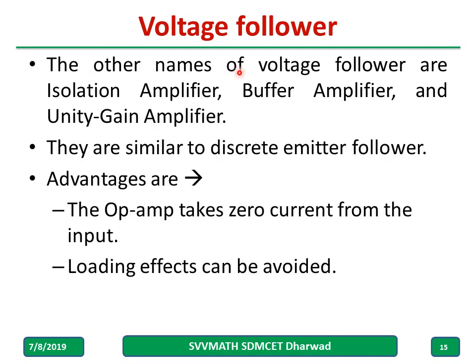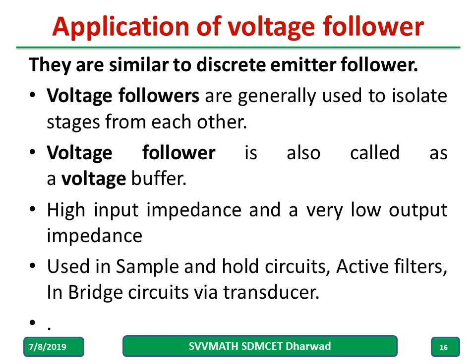The voltage follower has other names: isolation amplifier, buffer amplifier, and unity gain amplifier. Advantages include that the op-amp takes zero current from the input and loading effects can be avoided. Voltage followers are generally used to isolate stages from each other. They are also called voltage buffers. High input impedance and very low output impedance are very advantageous, and it has many applications including sample-and-hold circuits, active filters, bridge circuits, and transducer interfaces.